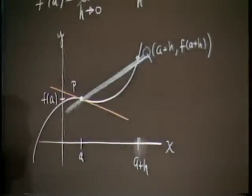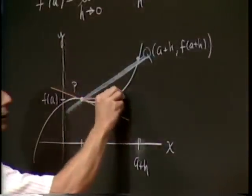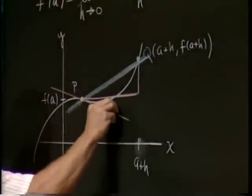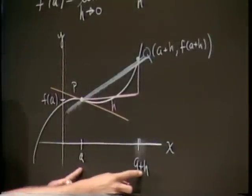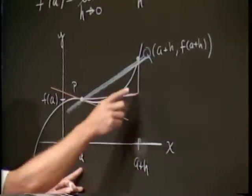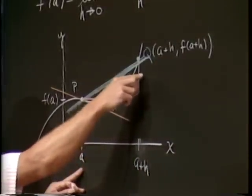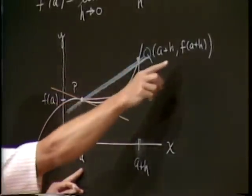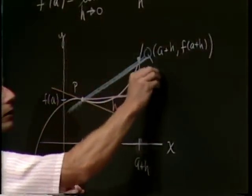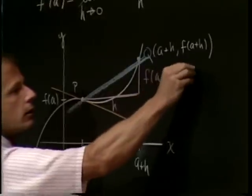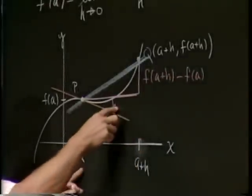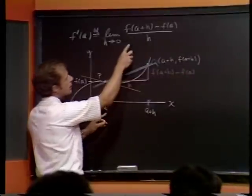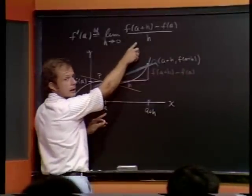And then when we compute rise over run, the run is simply h units going from a to a plus h. That was the run, the rise is the difference in the y coordinates from f of a to f of a plus h. So rise over run, the slope of the blue line, is exactly what you see up here inside the limit sign.